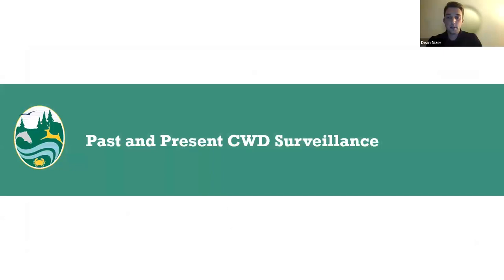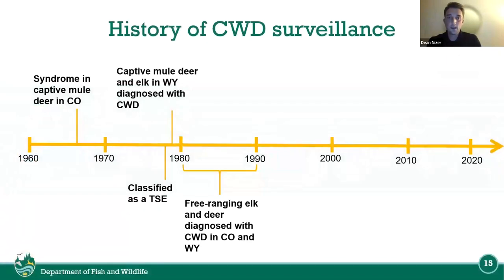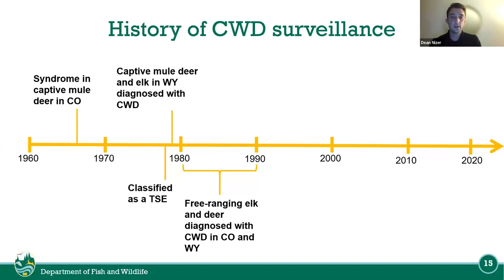For past CWD surveillance history: the syndrome was first observed in captive mule deer in Colorado in the mid-1960s, then classified as a TSE in 1978. Captive mule deer and elk in Wyoming were diagnosed with CWD thereafter.